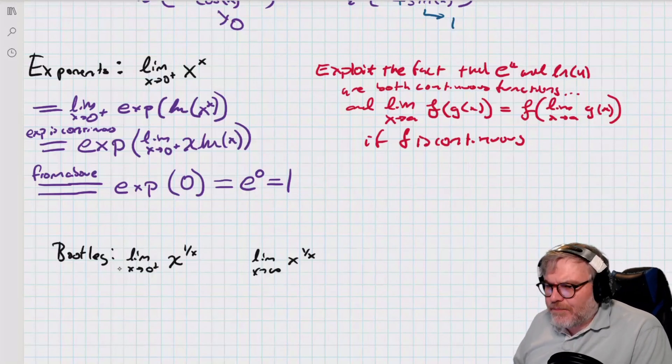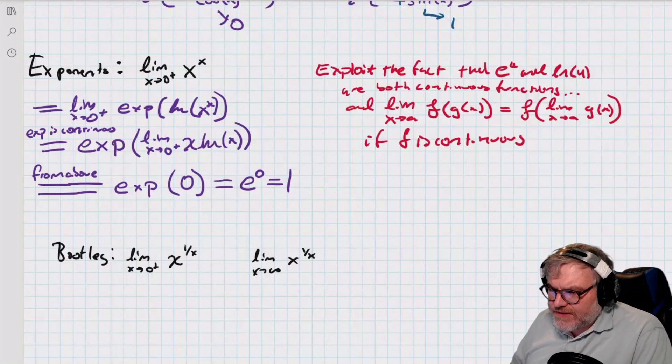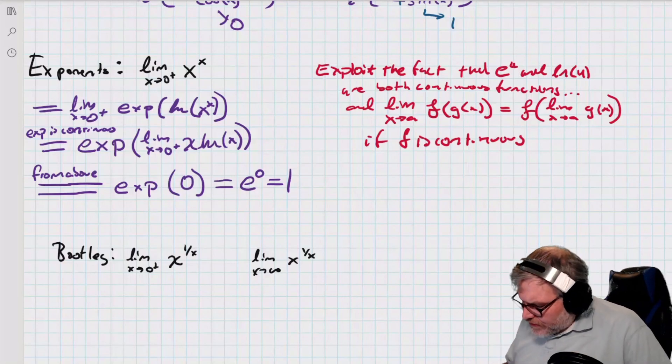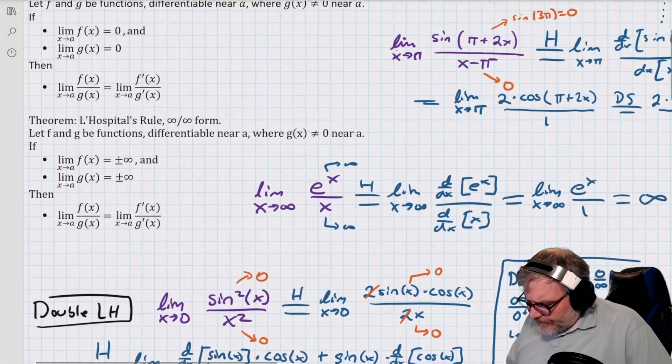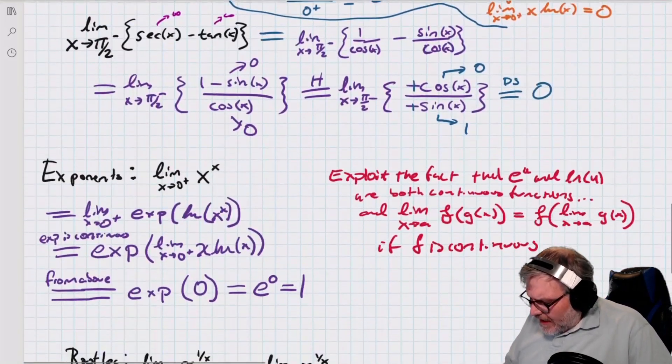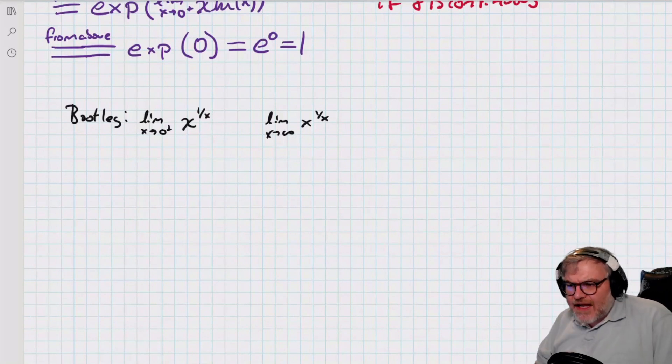And you'll see this again on the bootleg where I've asked you to compute the limit as x goes to zero plus of x to the 1 over x. And the limit as I go to infinity of x to the 1 over x. Well, that's it for this little part two. Don't forget, there is a part one that you need to watch as part of this. Lecture 11a. And next time, what we're going to do is start optimization. So, I will see you next time. Goodbye.